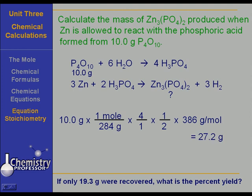And we come out with 27.2 grams. That is the weight of zinc phosphate that could be produced if everything were perfect. But what if we only captured 19.3 grams? Maybe we spilled some, maybe the reagents weren't good, maybe we didn't weigh something right. Who knows? But what is the percent yield?